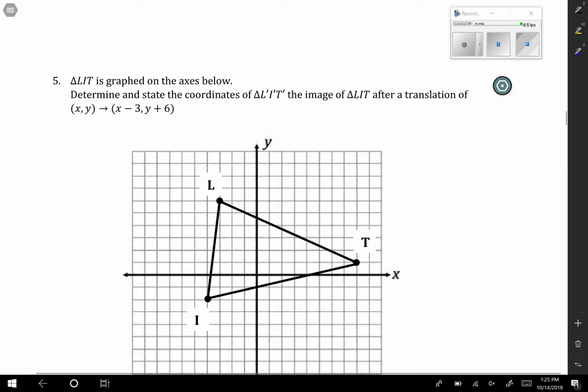Number five. Triangle LIT is graphed on the axes below. It says determine the coordinates of triangle L prime, I prime, T prime after a translation of negative 3, positive 6. I will tell you one of the points goes off of the graph paper, it's okay. So if we start with L, which is the point that does go off the graph paper, we go back 3, up 6. So we're somewhere up here. This would be L prime. So we could say L prime is the coordinate, well, if I started at negative 3, positive 6, to get to L prime I would wind up being at negative 6, positive 12.